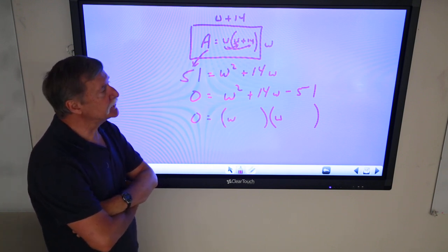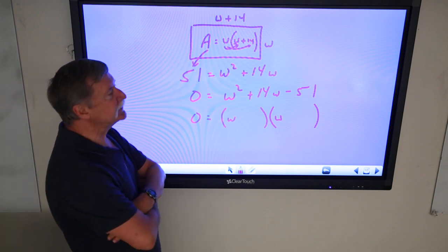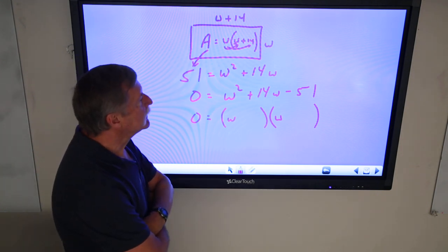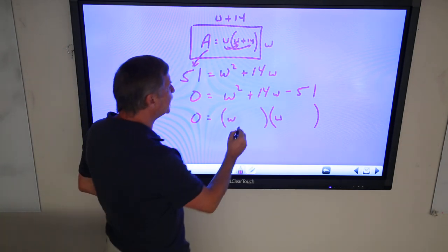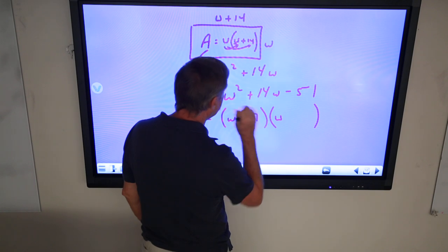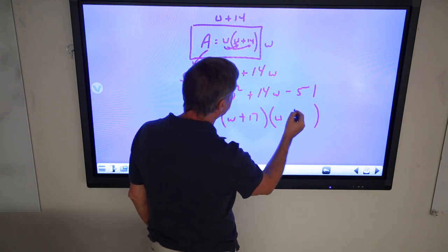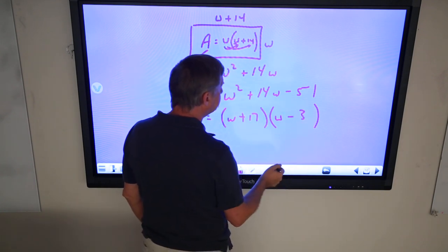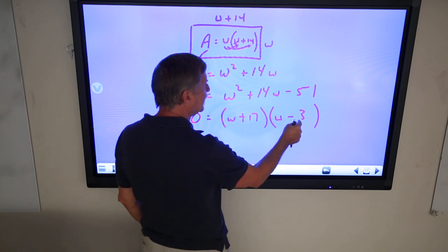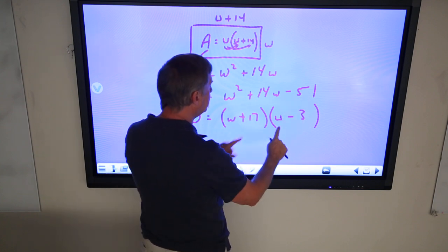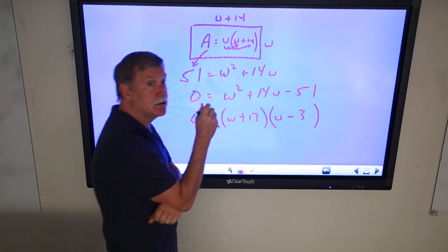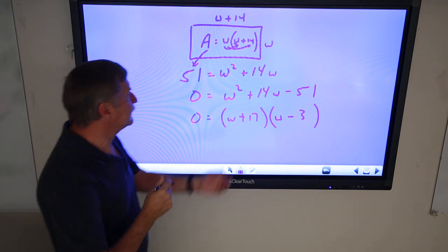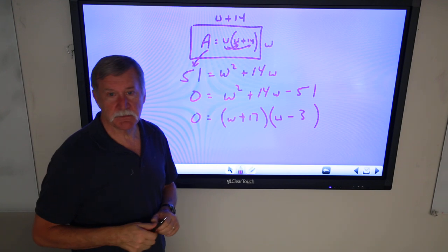And 3 happens to go in there exactly 17 times. And 17 and 3, I can combine to make a 14. So, if I go plus 17 and I go minus 3, then 17 times minus 3 gives me the minus 51. Plus 17W minus 3W gives me 14W. And I've got two things now that multiply together to make 0.